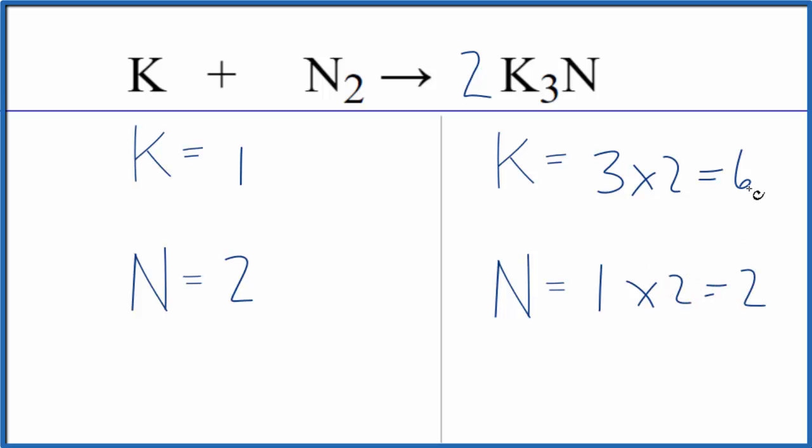But now it's fairly easy. We need six potassium atoms over here. We'll put a coefficient of six, one times six, that equals six. The nitrogens, they're already balanced.